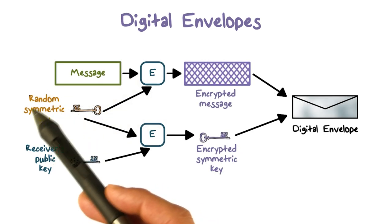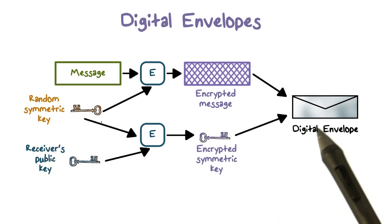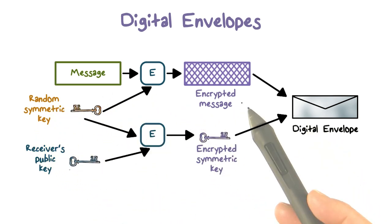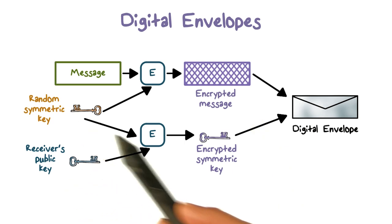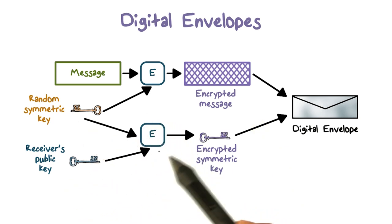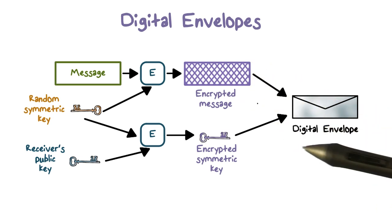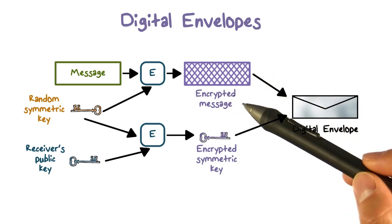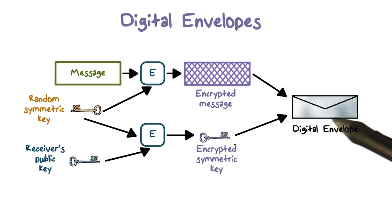To illustrate, Alice first creates a symmetric key that she wants to share with Bob. She encrypts the message using this shared key. Then she also uses Bob's public key to encrypt this shared key. Then she can put the encrypted message and the encrypted key together and send them to Bob.